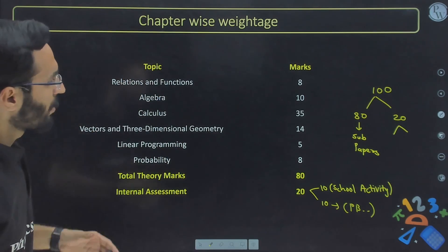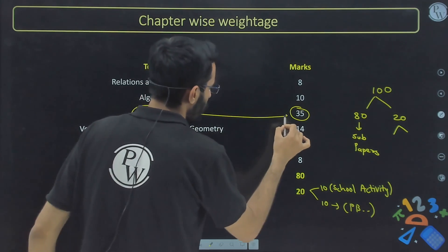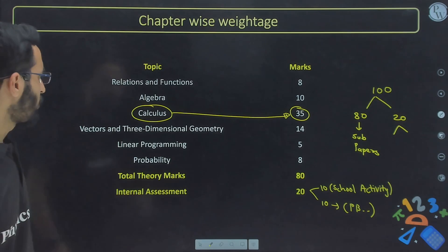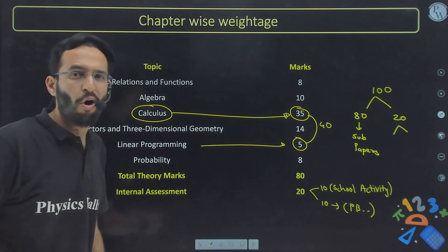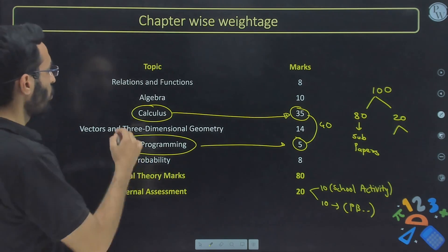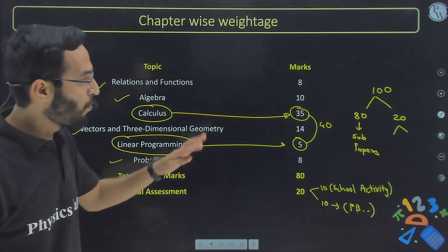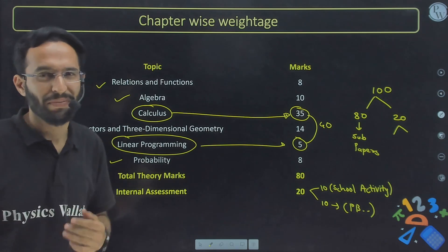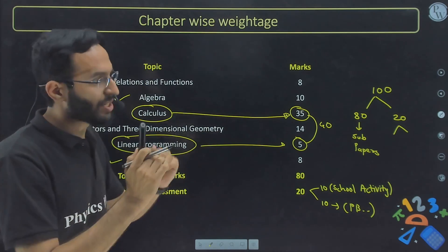The highest-weighted topic is Calculus, comprising 35 marks, and Linear Programming contains 5 marks — together 40 marks. In Board Booster Batch, I am going to cover Calculus and Linear Programming. Avinash Sir will cover all remaining chapters: Relations and Functions, Algebra, Vectors, 3D Geometry, and Probability — another 40 marks of weightage.